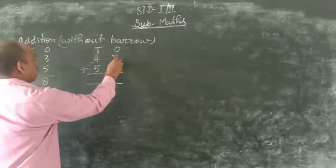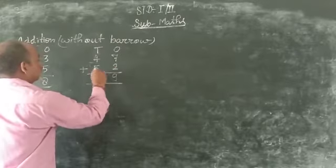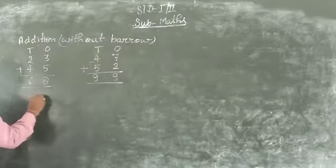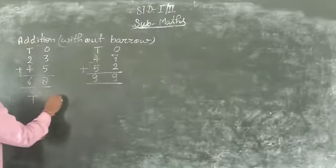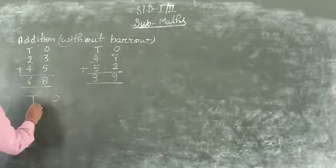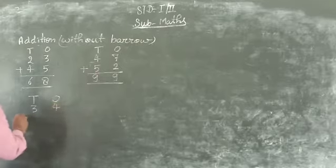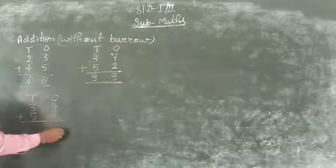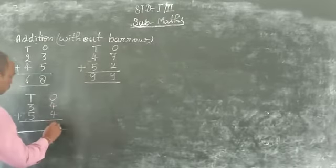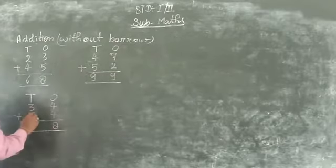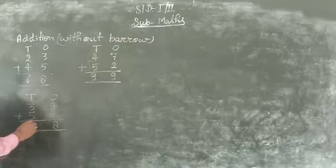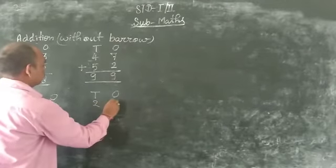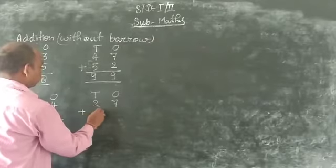Now we add 8 plus 2 is 10, 4 plus 5 is 9, 10, 1. 54 plus 54. Now we add 4 plus 4 is 8. 3 plus 5 is 8. 9, 10, 1. 20. 18 plus 62.